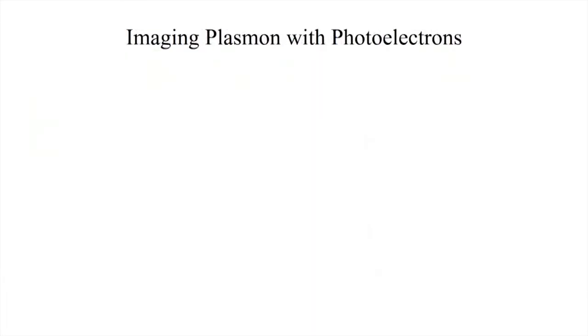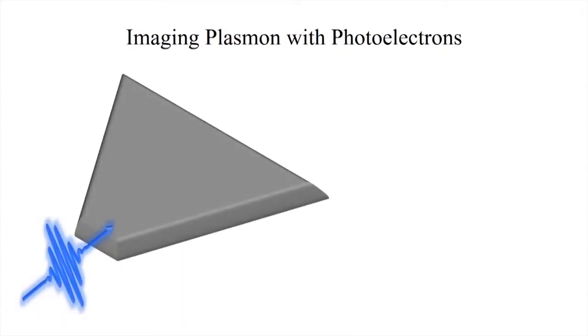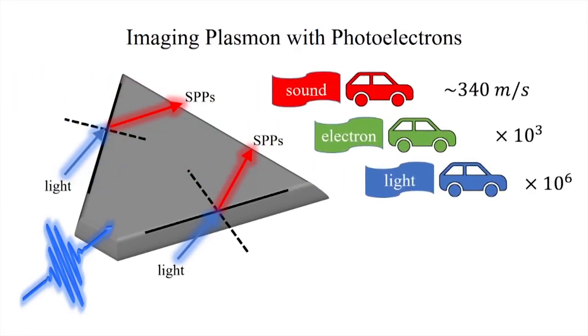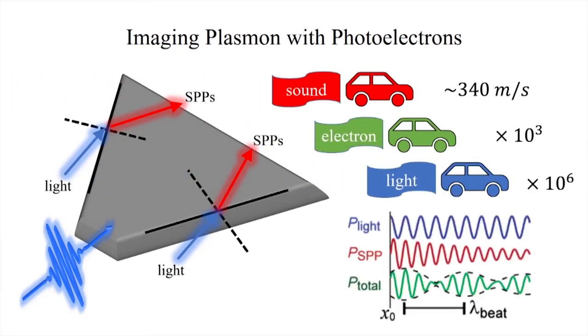When the island is illuminated by femtosecond pulses, surface plasmon polaritons are excited and launched at its sharp edges. Because nothing is faster than light, we cannot directly take snapshots of light propagating on the silver vacuum interface. Instead, we detect an interference pattern between the surface plasmon polariton and the light that excited it, which forms a static grating pattern of enhanced and depressed fields on the surface.